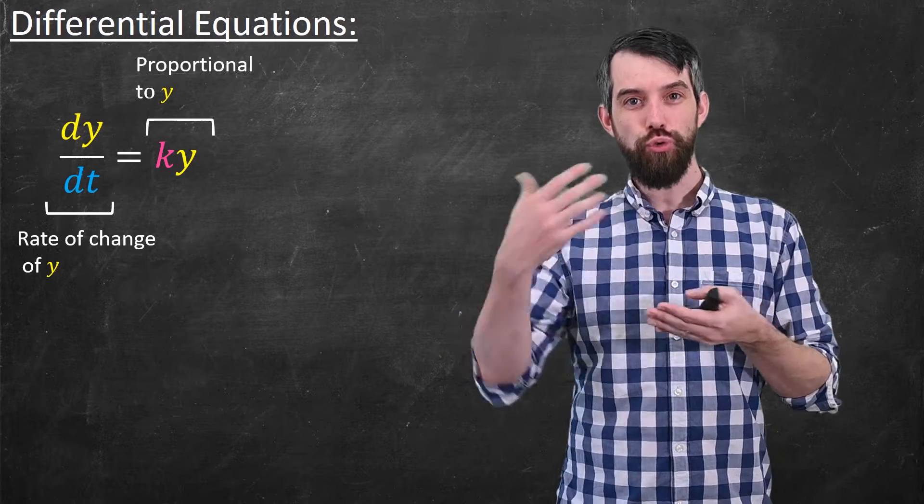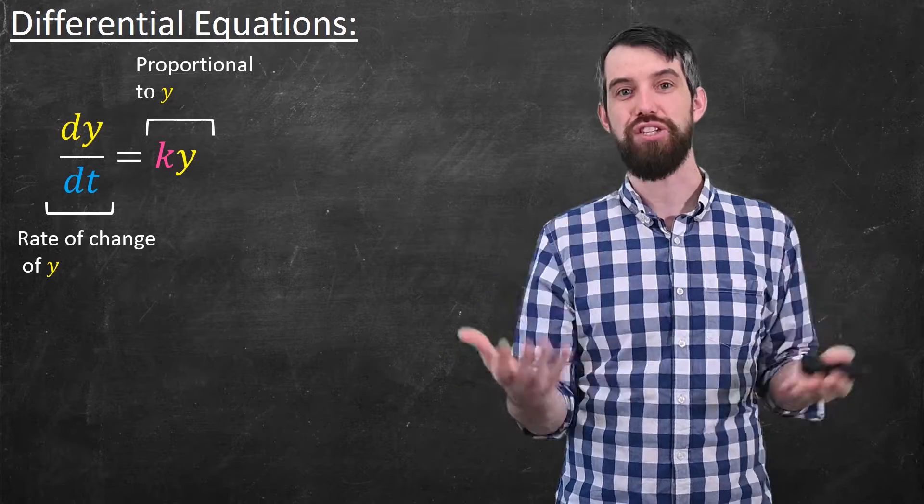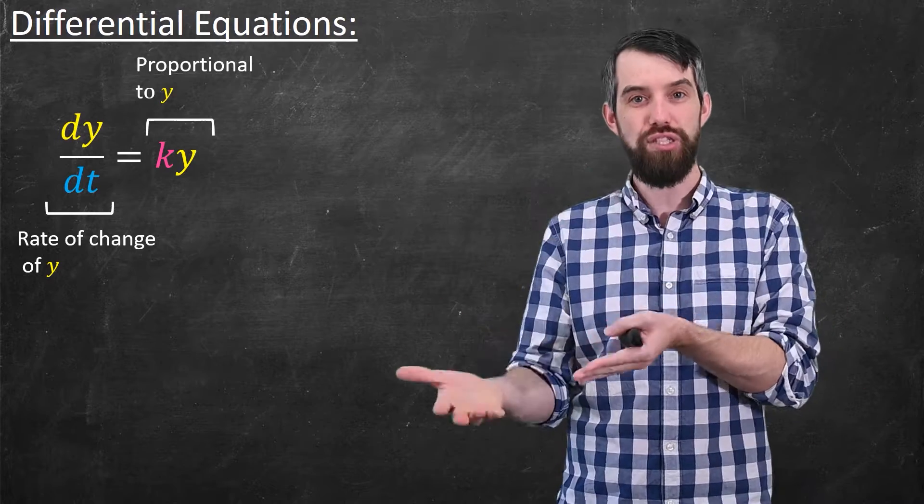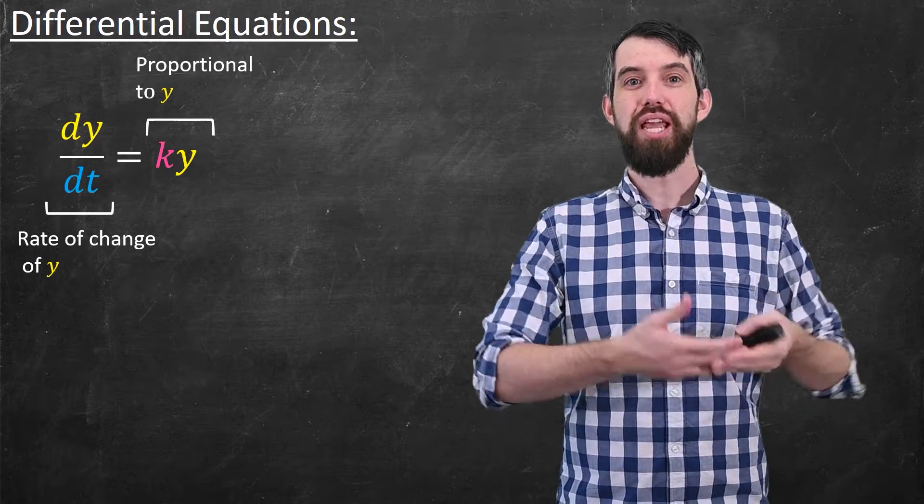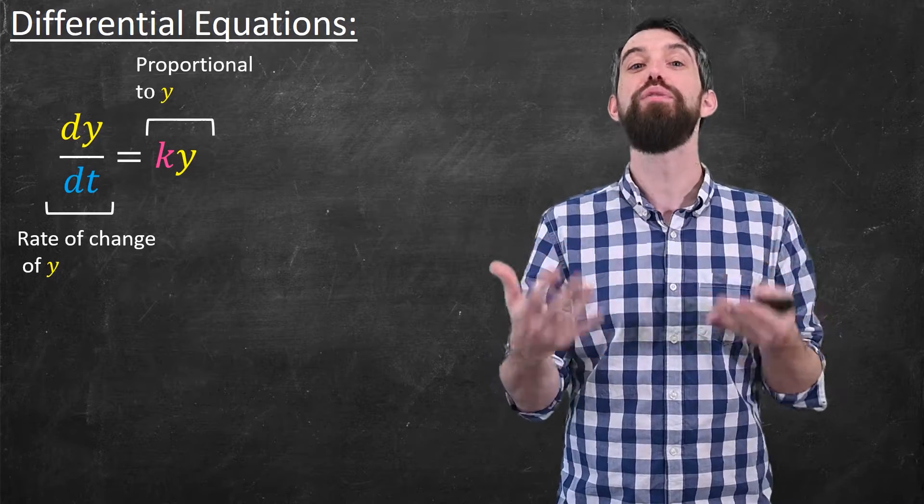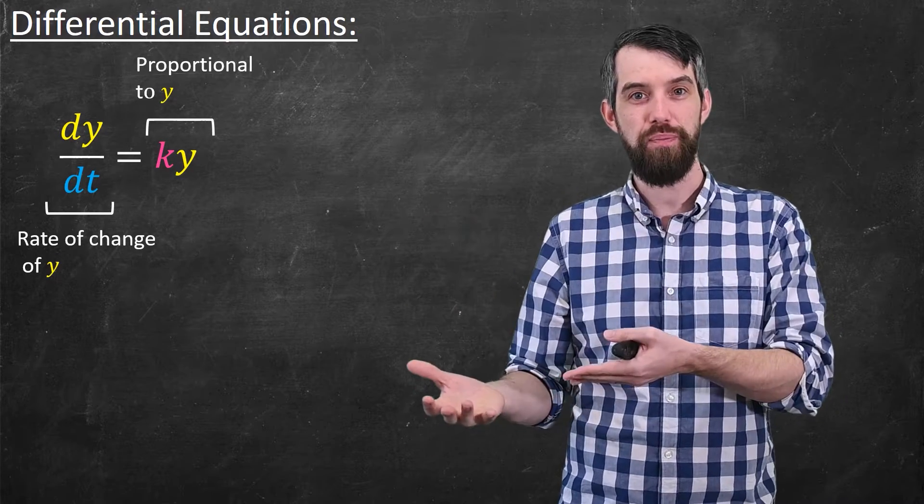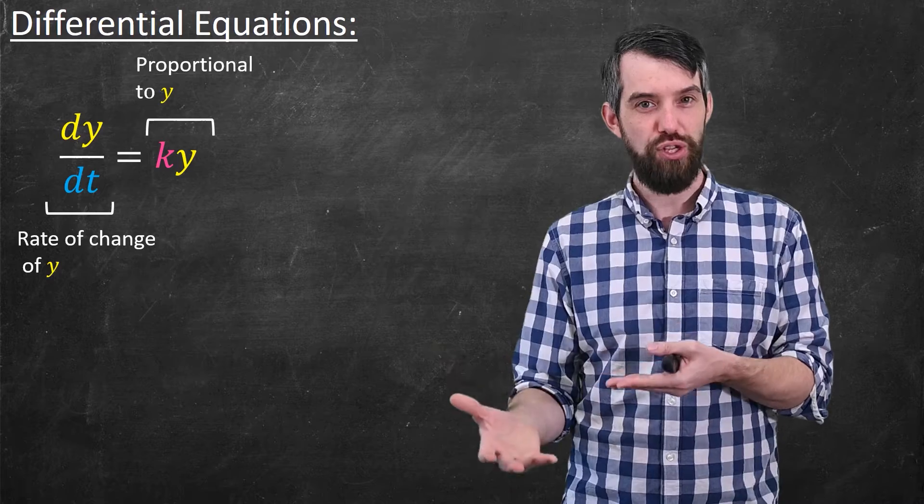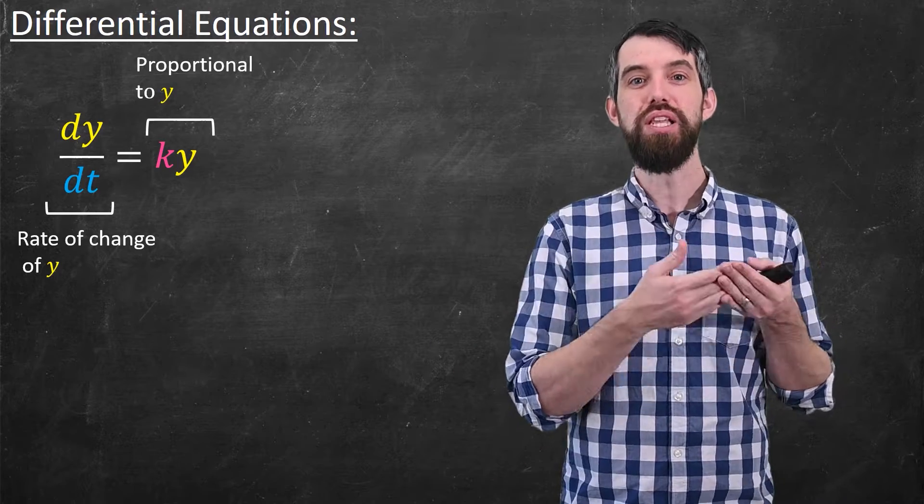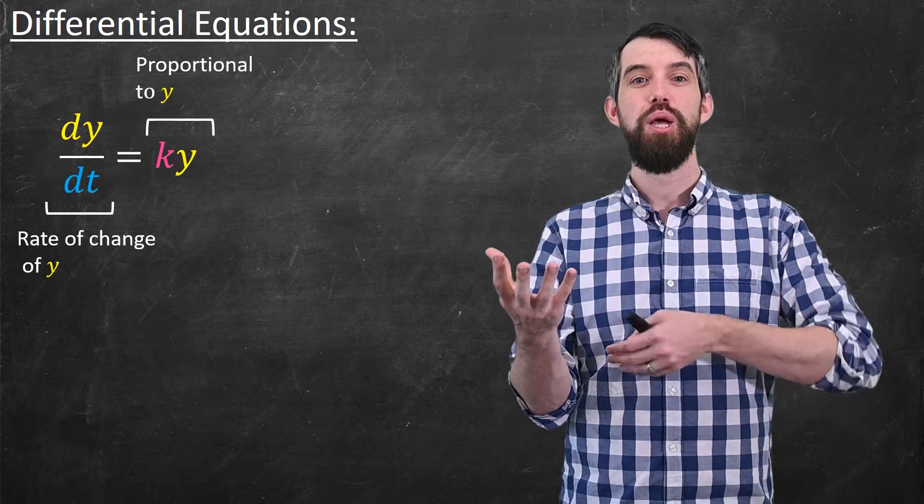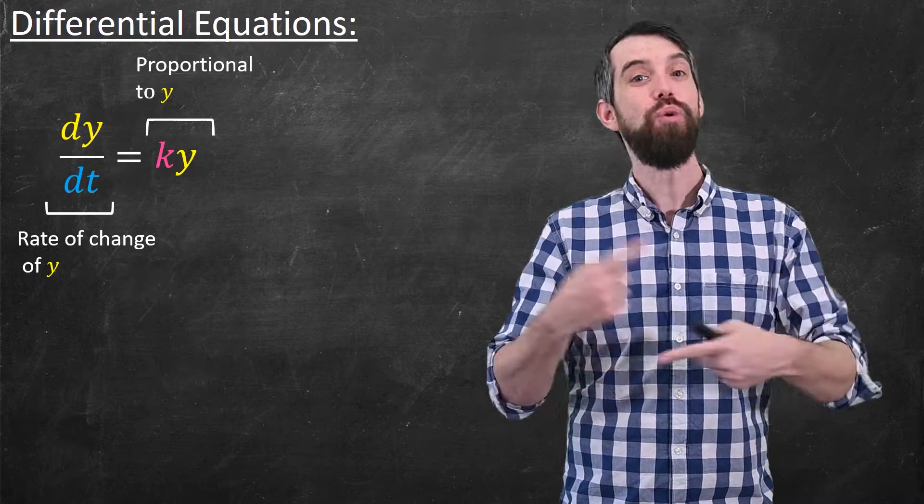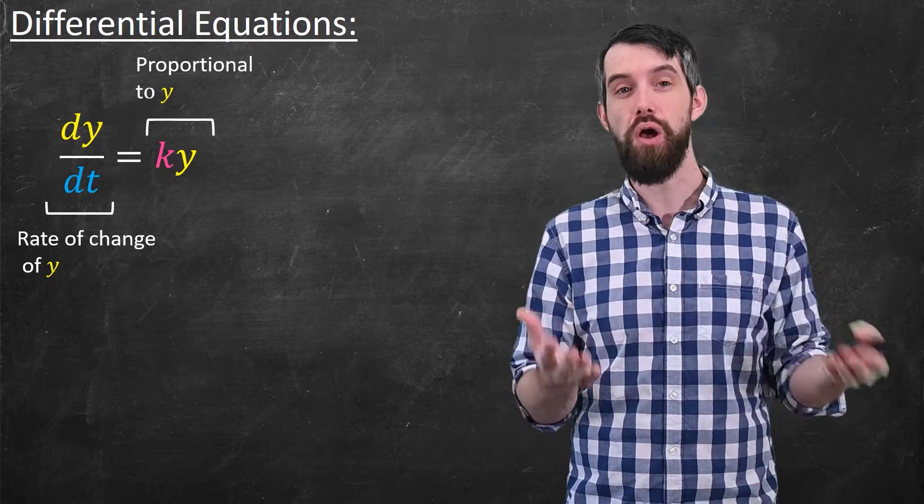So the growth rate of the infection, the number of new cases you're going to get per unit of time, is just a multiple of the number of infected cases you have already. So the point of this differential equation is that it captures the idea of growth rates being proportional to the amount you have. And that relationship is something that we see very often.